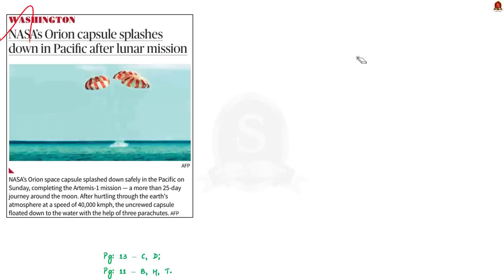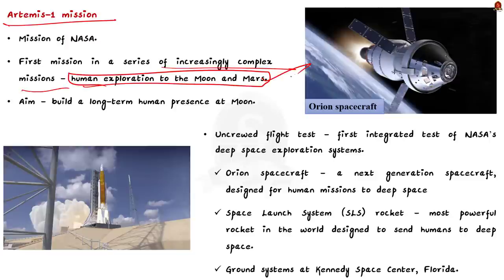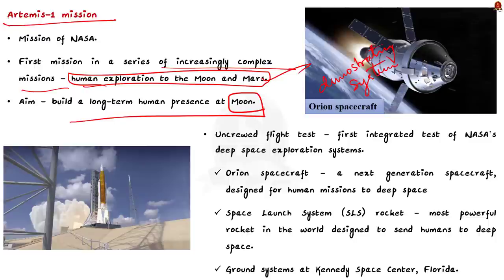The next news article mentions that NASA's Orion space capsule safely landed in the Pacific. The capsule was part of the Artemis 1 mission and completed a 25-day journey around the moon. Artemis 1 is the first mission in a series of increasingly complex missions to enable human exploration of the moon and Mars. It is an uncrewed flight test aimed at building long-term human presence at the moon and providing a foundation for human deep space exploration.